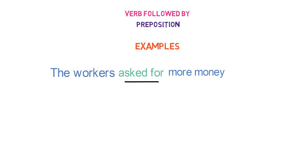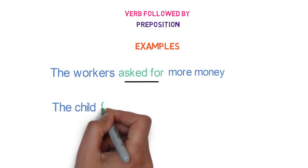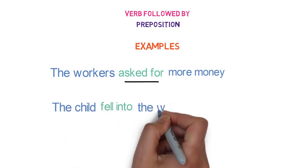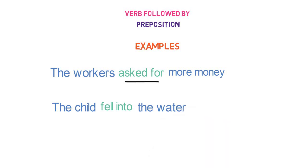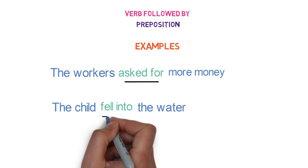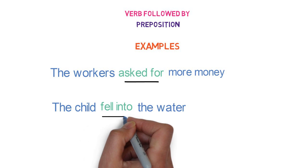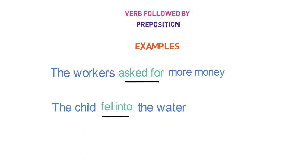Let's look into the next example. 'The child fell into the water.' Here, 'fell' is the verb and 'into' is the preposition. And the whole group of words 'fell into' is the phrasal verb containing a preposition.